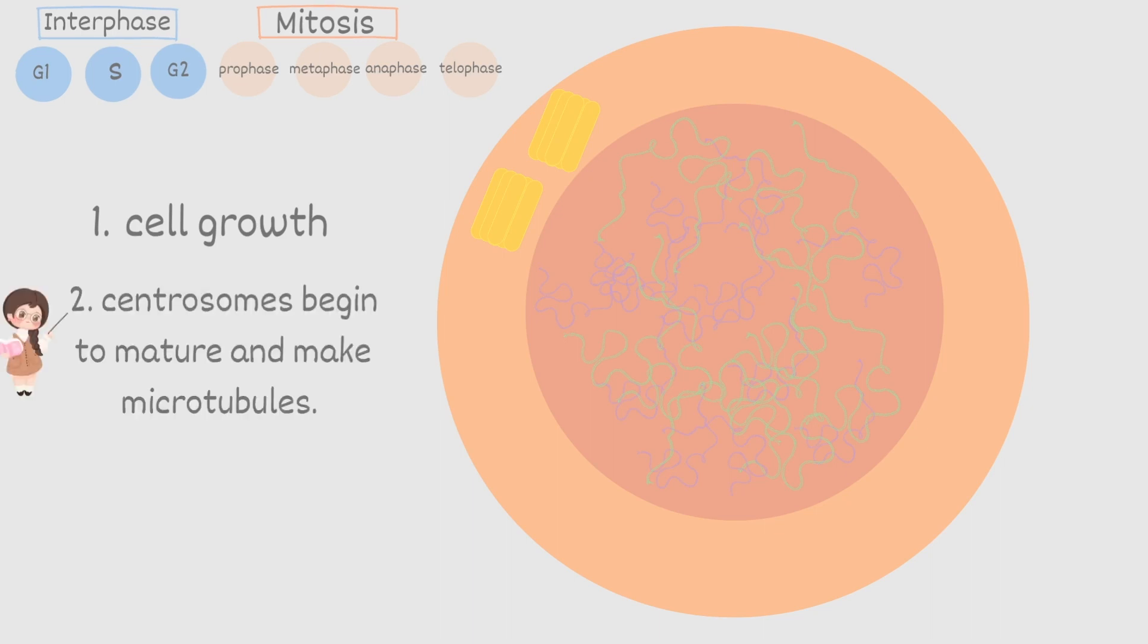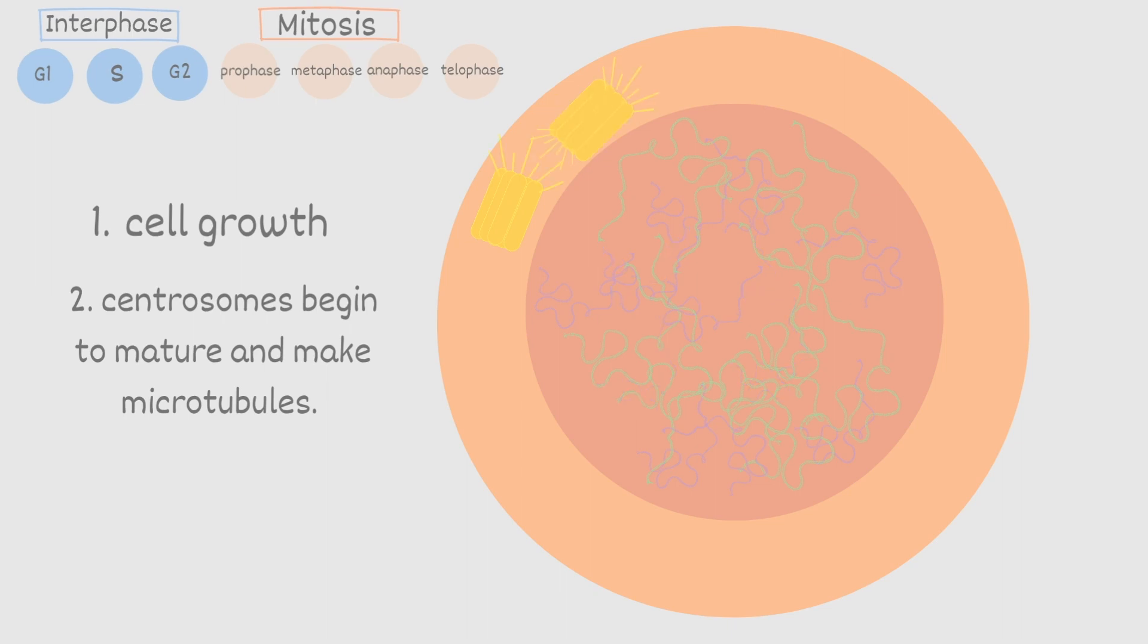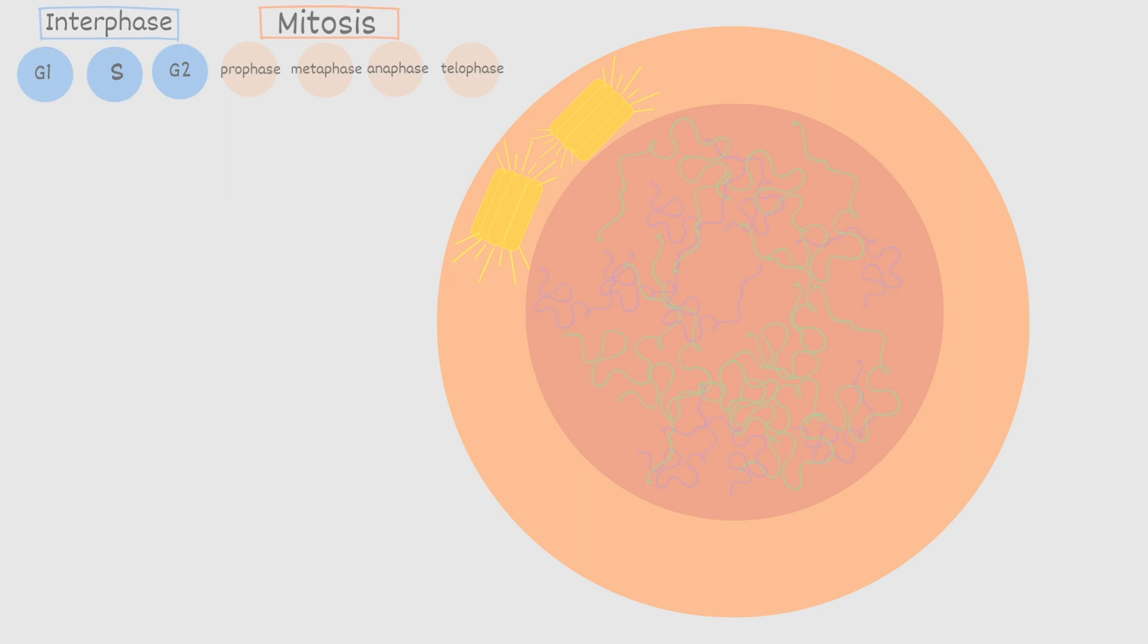Secondly the centrosomes begin to mature and they make microtubules. Also the centrioles begin to elongate and by the way the centrioles are referring to each of the long tubes that make up the centrosome. So essentially a centrosome is made of centrioles. Next the cell finally enters mitosis.